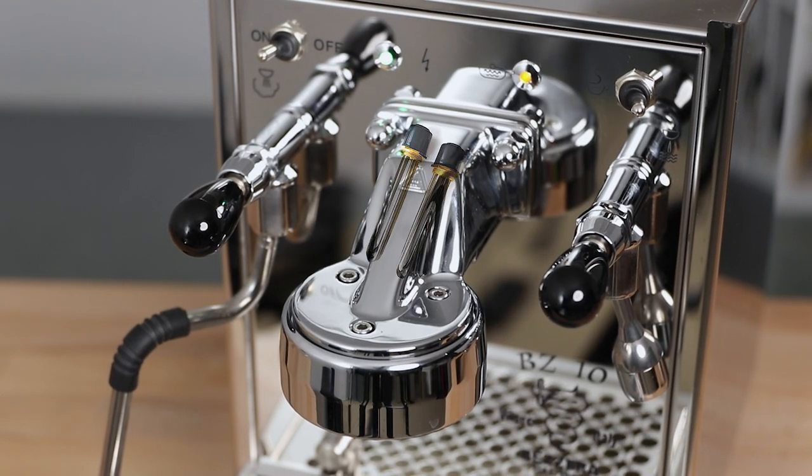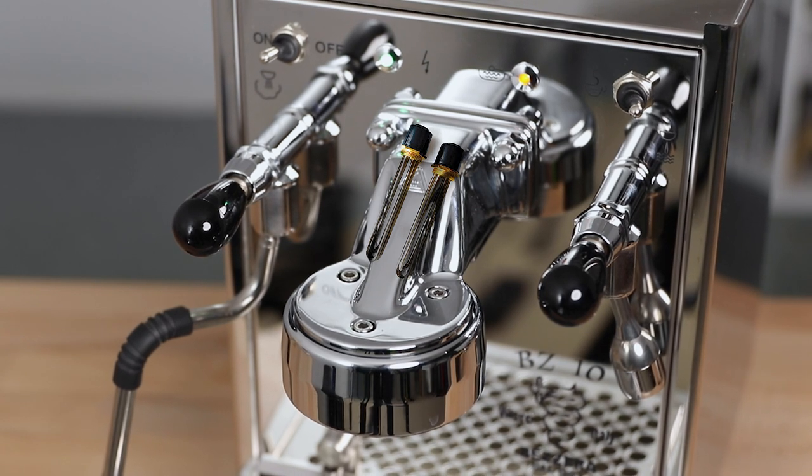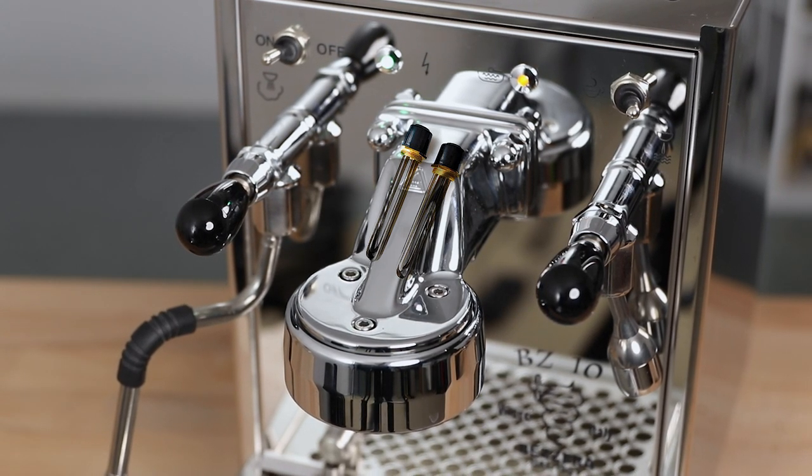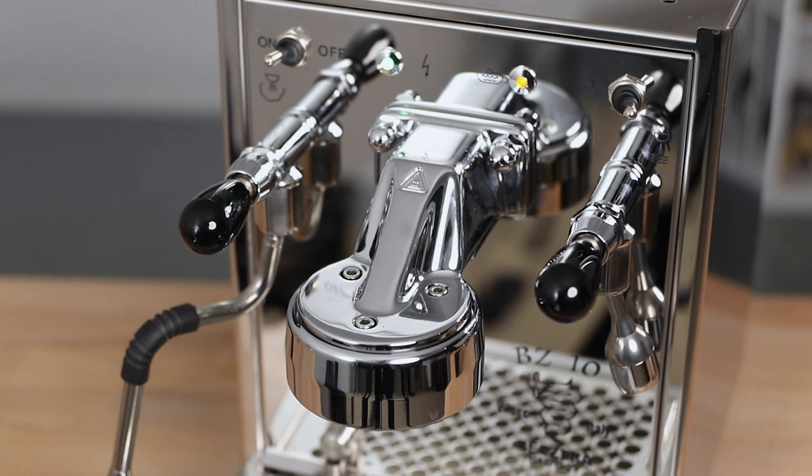So when you switch the machine on, dual heating elements go to work in heating up this group head independently, quicker than a traditional E61 group relying on the boiler. And this design assists with more stable brewing temperatures for your espresso throughout the extraction.